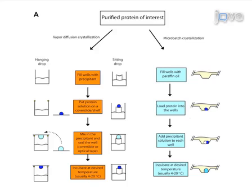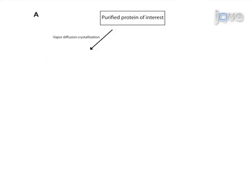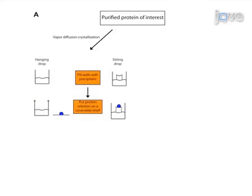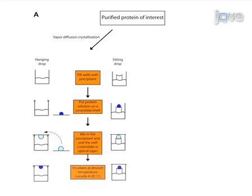For vapor diffusion crystallization, the wells are filled with precipitant, then a high concentration of purified protein sample is mixed with the precipitating agent. The mixed drop is then sealed in a well containing the precipitant solution.